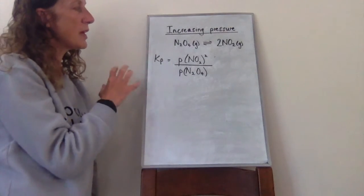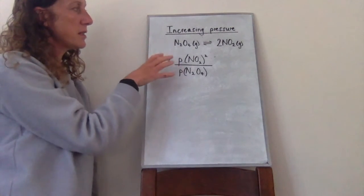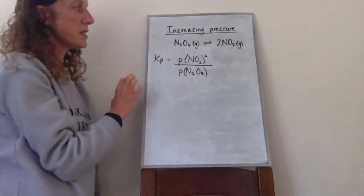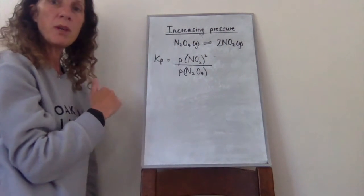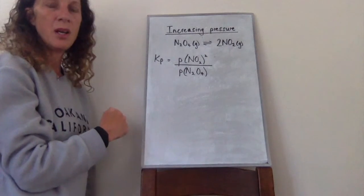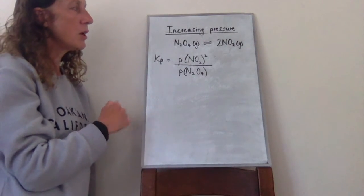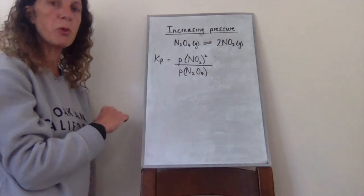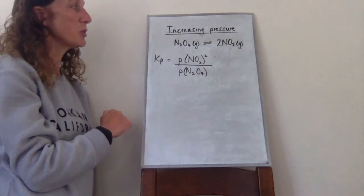We know that if we added pressure to this system the equilibrium would shift to the left-hand side. But at A2 we have to explain it in a different way — not just that it shifts to the side of fewest moles, but why it shifts to the side of fewest moles.